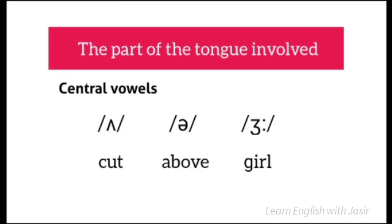To summarize, the part of the tongue involved gives us three classifications: front vowels, back vowels, and central vowels. We have also discussed examples for each. This is all about the classification of vowels based on the part of the tongue involved. In the next session, we will discuss the classification based on the height to which the tongue is raised.